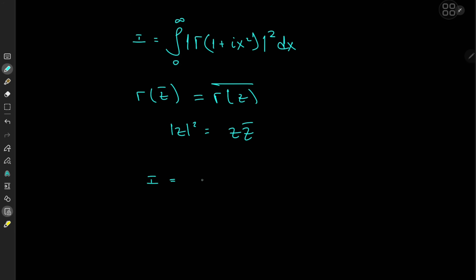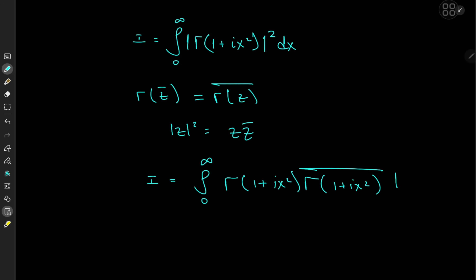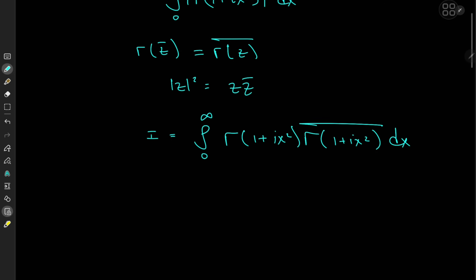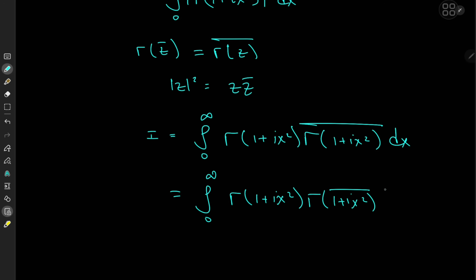So we'll expand the integral I as the integral from 0 to infinity of Γ(1 + ix²) times Γ(1 + ix²) conjugate dx. Making use of that property, the conjugate of Γ(1 + ix²) is Γ(1 − ix²), which gives us the integral from 0 to infinity of Γ(1 + ix²) · Γ(1 − ix²) dx. And I know it doesn't look that much better, but trust me, this is way better.